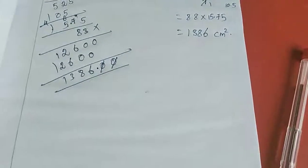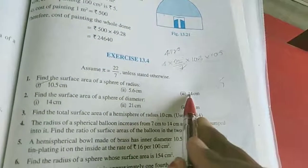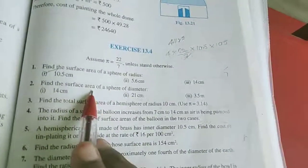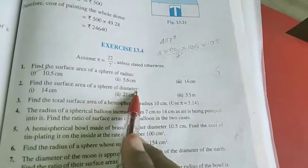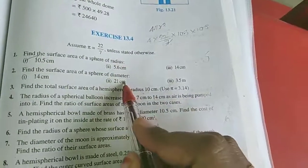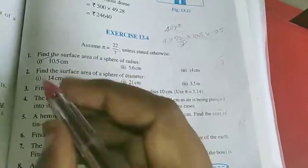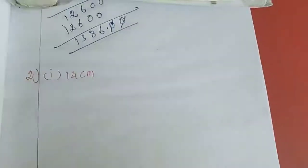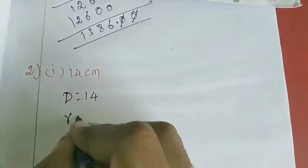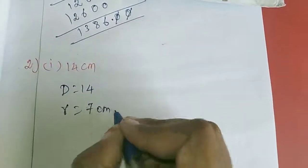That's all for the first sum. Now we move to the second sum: Find the surface area of a sphere of diameter. In the first sum they gave the radius; here they gave the diameter. Diameter D = 14, so R = 7 centimeter.